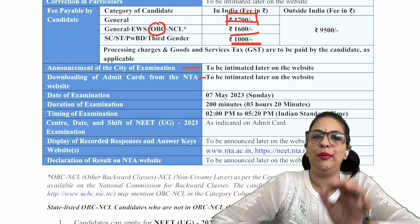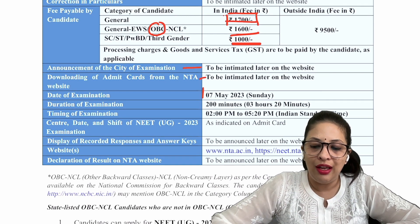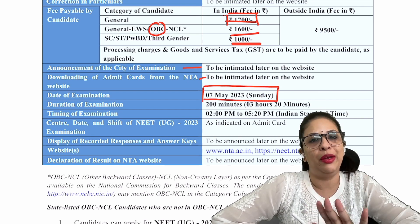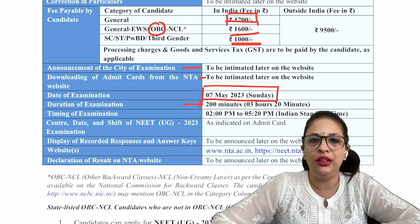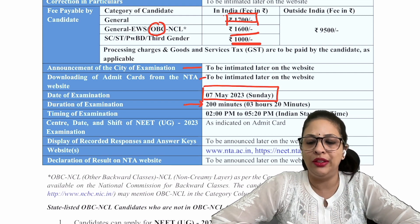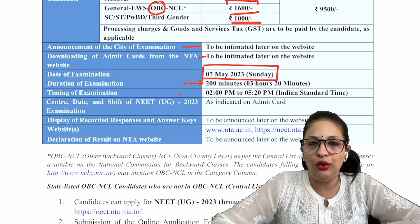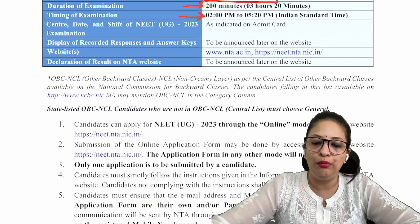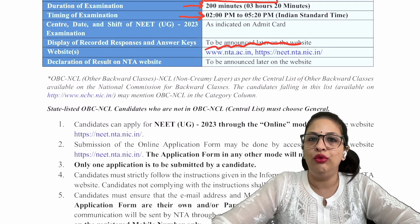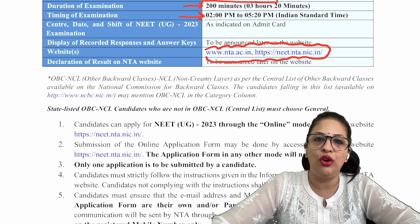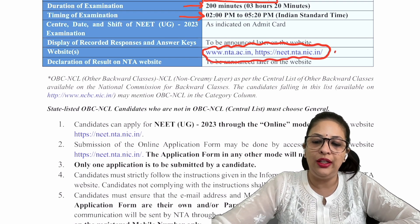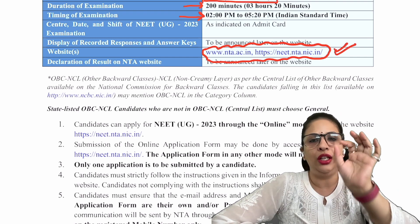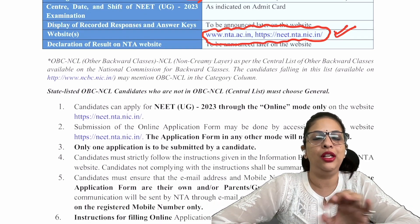The announcement of city of examination and admit card download will be notified later on NTA's website. Your exam is on 7th May — remember this confirmed exam date. The exam will be 200 minutes, that is 3 hours 20 minutes — same as last year, no change. It will start at 2 PM and end at 5:20 PM. All this information is important and the most important thing given here is NTA's official website: neet.nta.nic.in — check this website regularly for all NEET and exam-related information.